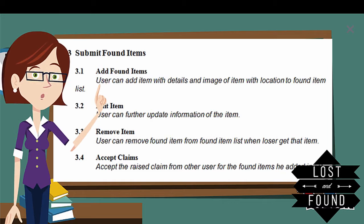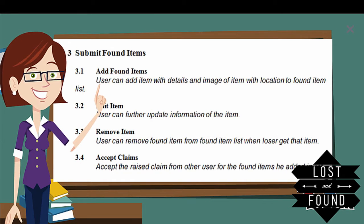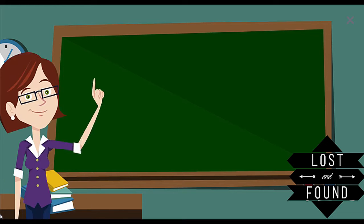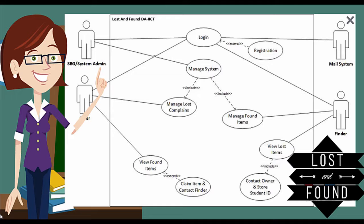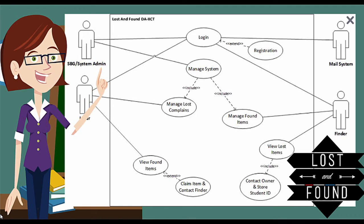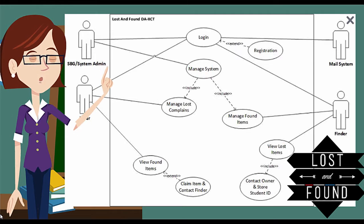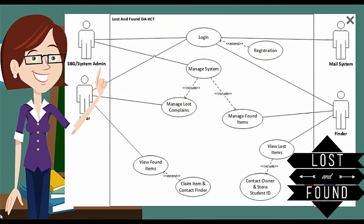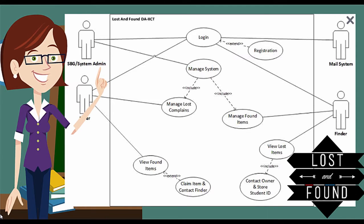We have now covered the functional requirements of the lost and found system. For analyzing the whole system, we need UML diagrams for a better understanding. The first UML diagram is the use case diagram. A use case diagram at its simplest is a representation of a user's interaction with the system that shows the relationship between the user and the different use cases in which the user is involved.